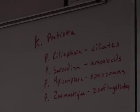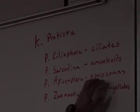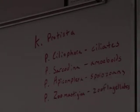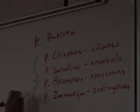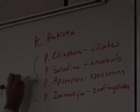What is the example for sporozoans? Plasmodium — Plasmodium is the sporozoan that causes malaria. And all of these are protozoans. What does that mean? Animal-like. So these are your animal-like protists — protozoans.